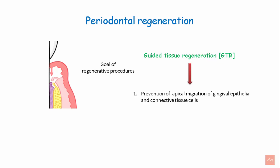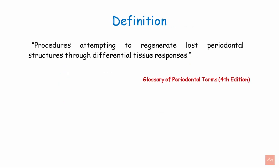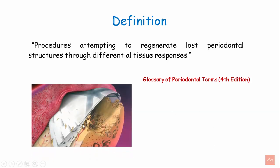GTR prevents the apical migration of the gingival epithelial and the connective tissue cells, and it maintains a wound space into which selective repopulation of cells can occur. Guided tissue regeneration is a process that attempts to regenerate lost periodontal structures through differential tissue responses. In this image, you can see that a GTR membrane is placed between the gingival tissues and the bone. This membrane separates the gingival epithelial and connective tissue cells from reaching the site of the denuded area. The membrane allows only the periodontal ligament and alveolar bone cells to populate in the zone.